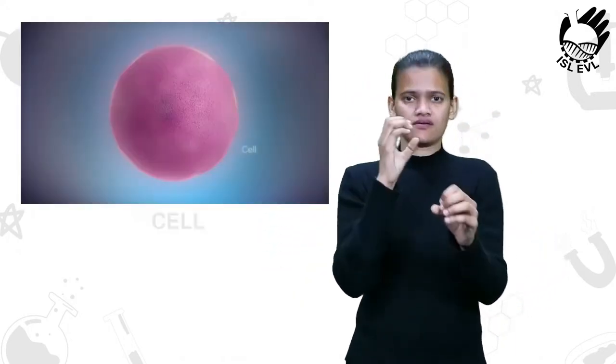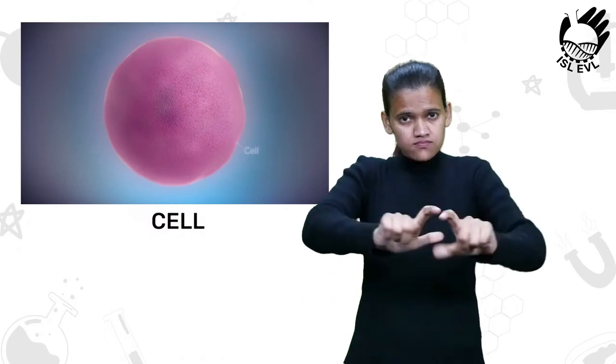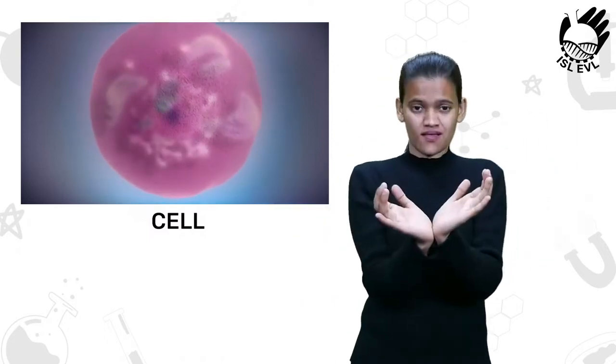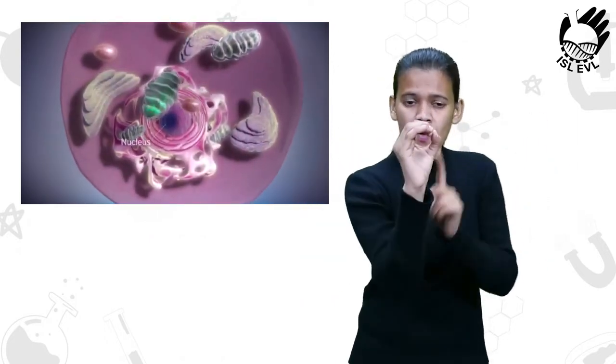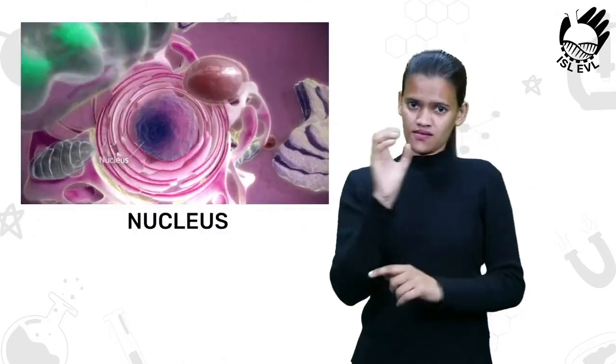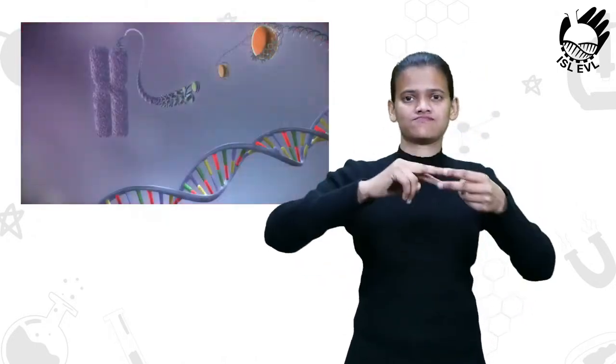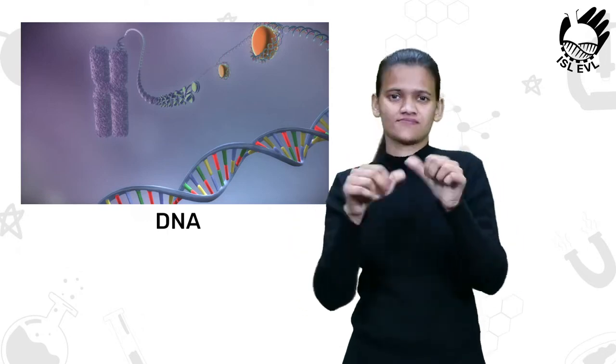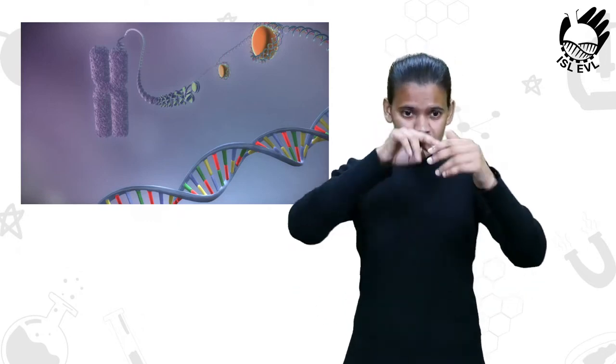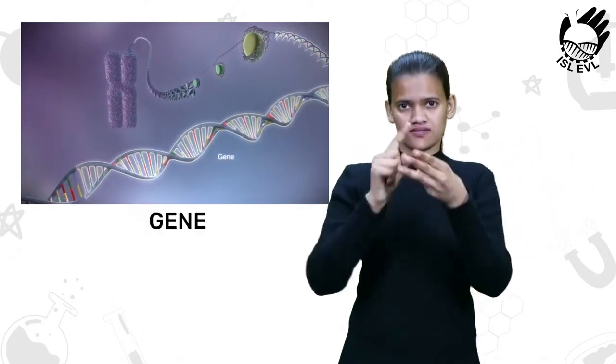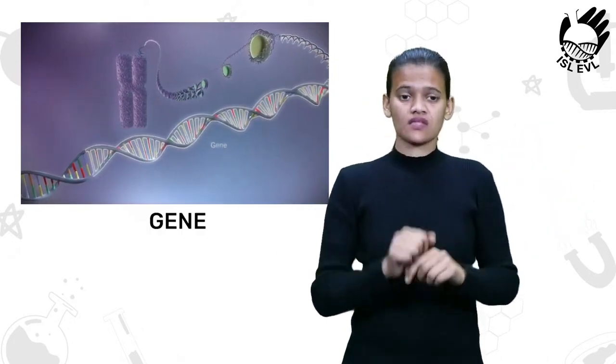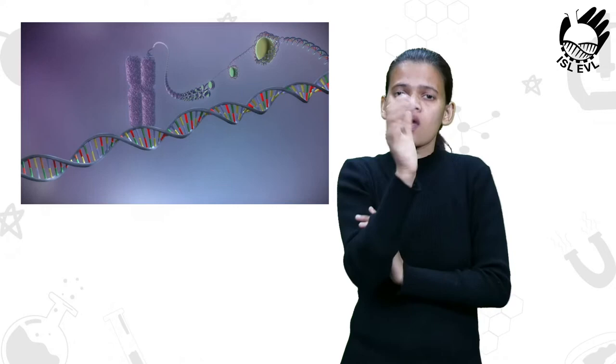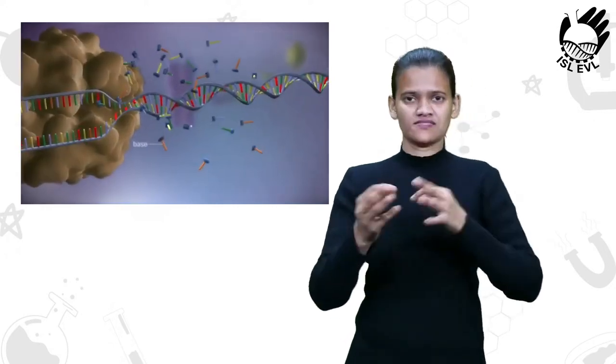A cell is the basic unit of life. There is a structure called the nucleus which contains DNA. Within the DNA are sections called genes. These genes contain the information for making protein.